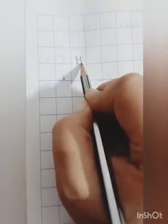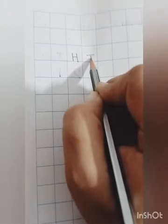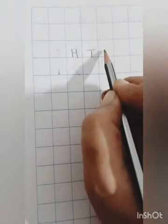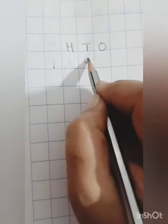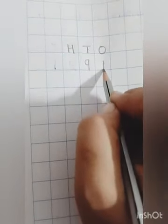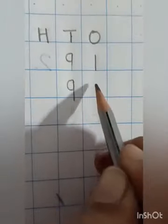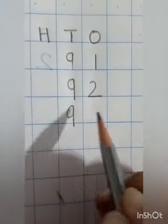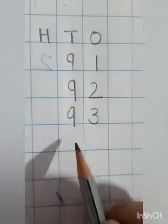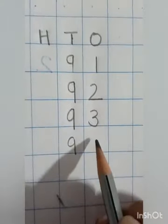On the next page again you will leave these two lines, first line, second line. Then again two boxes. Then you will write H for hundred because we have to write from 91 to 100 here. So, 100 will be the last number. Then T for tens and O for ones. We have to start from 9, 1, 91. 9, 2, 92. 9, 3, 93. 9, 4, 94.